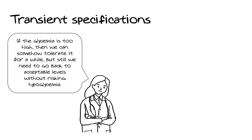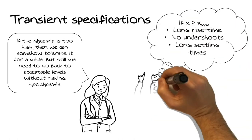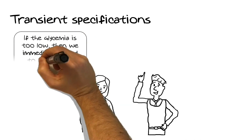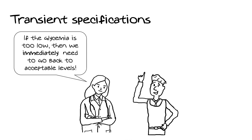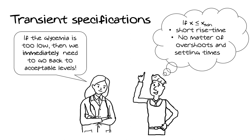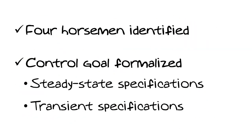Regarding transient specifications: in case of hyperglycemia, our machine should release insulin very slowly. In control language, this means the rise time of our performance output — the glycemia — can be long, but we should avoid undershoots. In case of hypoglycemia, we have to restore acceptable glycemia levels as fast as possible — a very short rise time — but we are allowed some glycemia overshoot and larger settling times, because being above the upper limit is not as dangerous as being below the lower limit. We have identified the four horsemen and specified the control objectives.